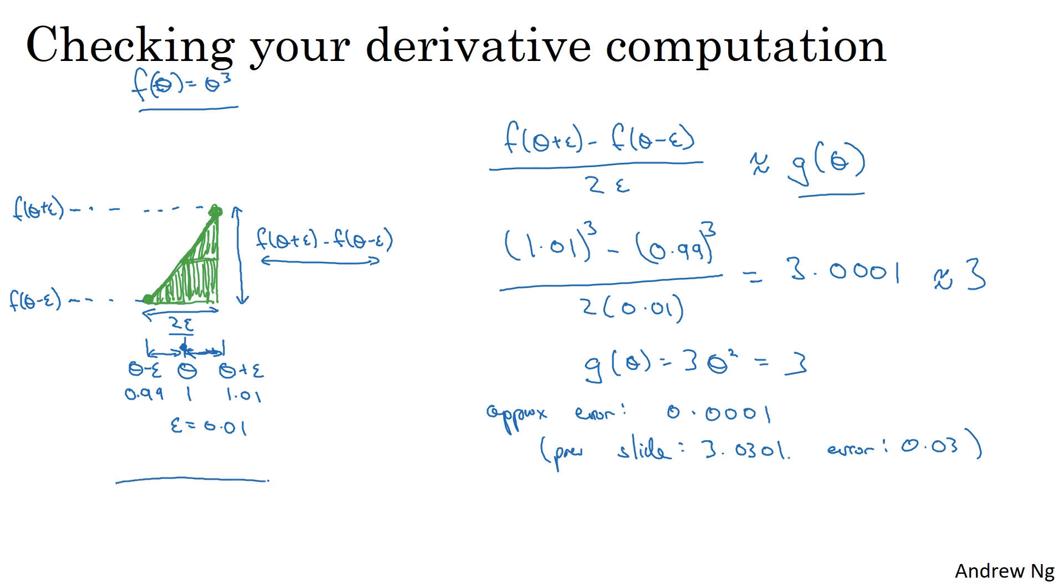A little bit of optional theory for those of you that are a little bit more familiar with calculus—it turns out that, and it's okay if you don't get what I'm about to say here—but it turns out that the formal definition of the derivative is, for very small values of epsilon, f of theta plus epsilon minus f of theta minus epsilon over 2 epsilon. And the formal definition of derivative is in the limit of exactly that formula on the right as epsilon goes to 0. And the definition of a limit is something that you learn if you take a calculus class, but I won't go into that here.